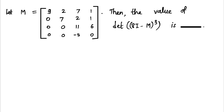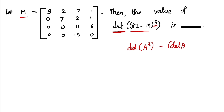Hey everyone, in this video we are going to solve a question from IIT JAM 2020. These questions are from linear algebra and are easy but at the same time really very important. We have a matrix M and we need to find the value of the determinant of 8 times I minus M, its cube. As we know, determinant of A cubed equals determinant of A, its cube, so we will use this formula.